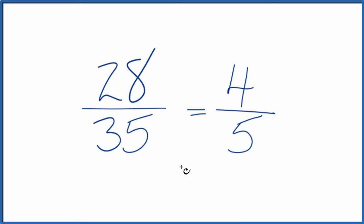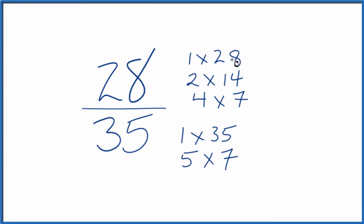You could also, if you didn't know that, write out the factors. When we look at the factors for 28 and then for 35, we see the greatest common factor. That's the 7.